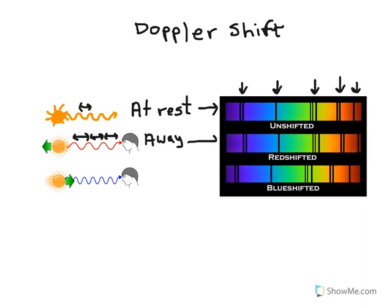What that means is, in our spectrum, those same lines that we saw before have now shifted closer to the red end of the spectrum — all our lines have shifted down towards the red end. The star is still going to look yellow; it is not going to change the color of the star. It is just going to change the position where we see these lines in our absorption spectrum.